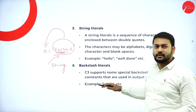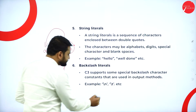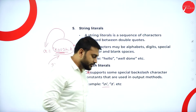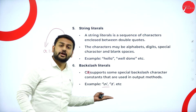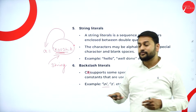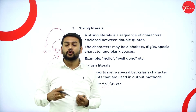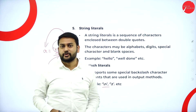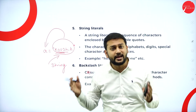Moving to the last one — backslash literals. C# supports many backslash literals, for example \n for new line and \t for new tab. These can also be stored in a variable. In total, we have six different types of literals — six different types of values that can be stored in a variable in C#.